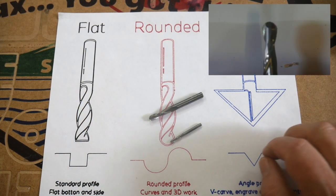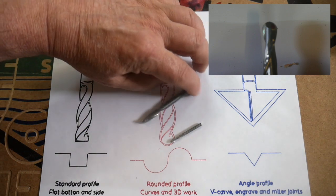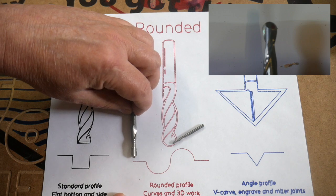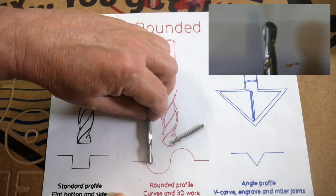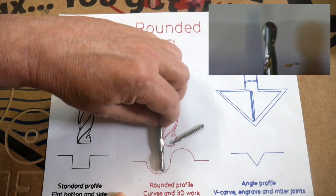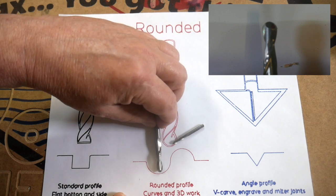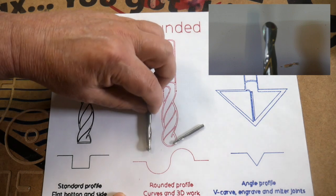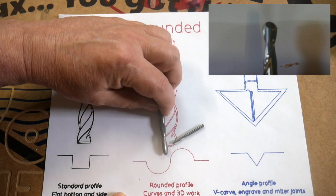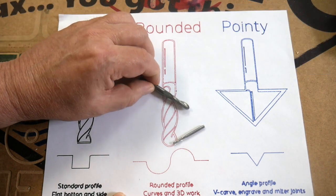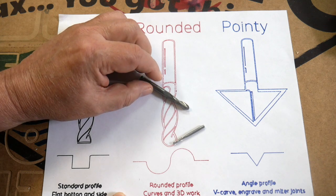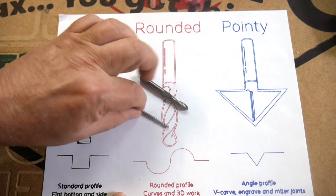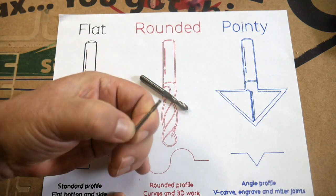Now the rounded bits are a specialty in and of themselves because with this rounded profile, what you can do is you can follow the edge of something and come down and cut all of these nice rounded pieces in here and not get a stair-step effect like you would with a flat bit. That allows these to cut 3D passes on work, and they're really, really useful for that. Again, they come in progressively smaller and smaller sizes.